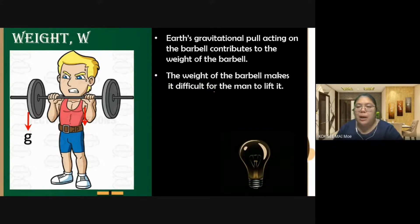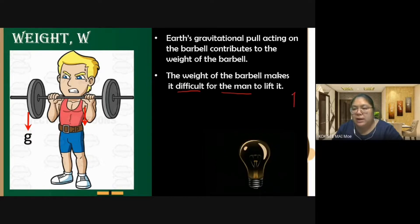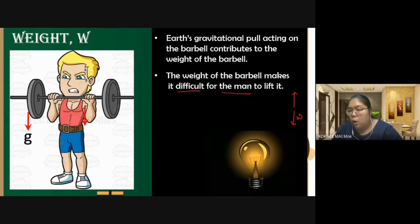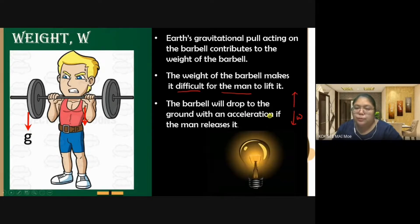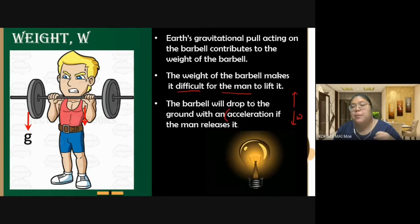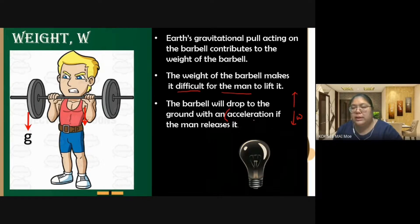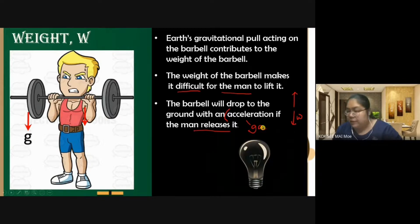The weight on the barbell makes it difficult for the man to lift it, because you lift upwards but the weight pulls downwards — you need to overcome the weight. When you release the barbell, it drops to the ground with an acceleration. This acceleration is called gravitational acceleration, and this situation is called free fall because of the gravitational acceleration.